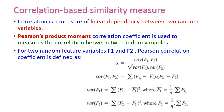The first one is correlation-based similarity measure. This type of measure is used to measure the linear dependency between two random variables. For this purpose, we can use Pearson's product-moment correlation coefficient, which is used to measure the correlation between two random variables F1 and F2 — randomly selected feature variables.